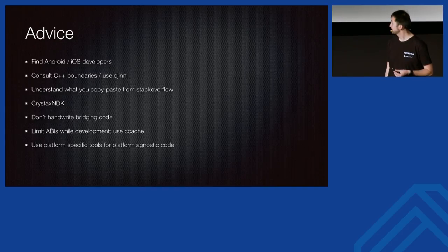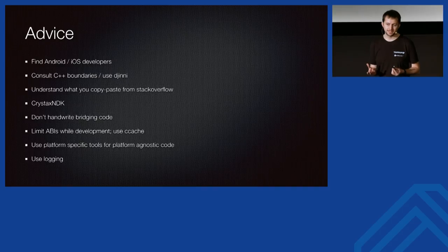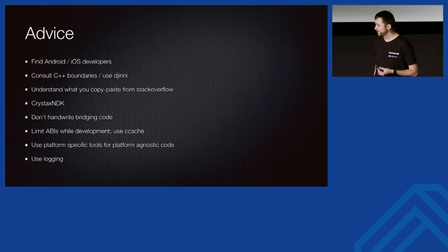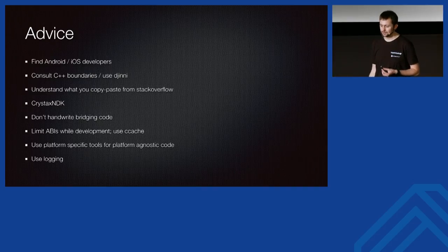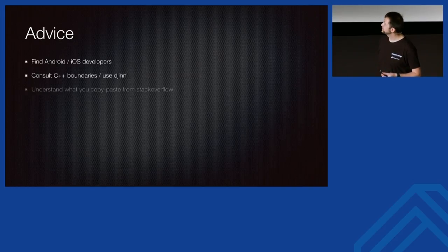Last but not least: use logging extensively. I have no way to produce core dumps on Android — you'll just get a C++ stack trace sometimes, and that might not be enough to know what went wrong during development. Use logging extensively and then turn it off partially in production.